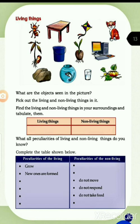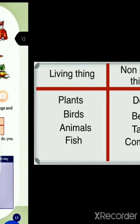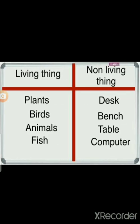Living things include plants, birds, animals, and fish. All plants are living things — coconut tree, mango tree, guava, grapes, vegetables, etc. All birds are living things — crow, parrot, eagle, etc. Animals — tiger, cheetah, elephant, cat, cow, etc. All animals are living things, and human beings are also living things.